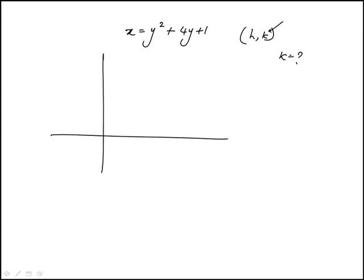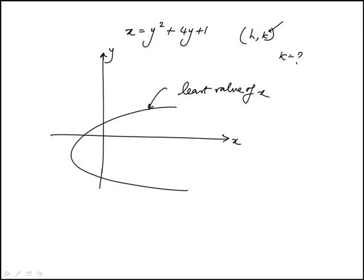So qualitatively, the parabola might look something like that. And so what we need to do is to find the lowest possible value, least value of x, because that's what the least value would be at the vertex. x can't be less than that.